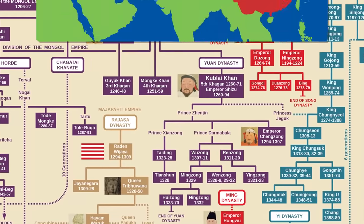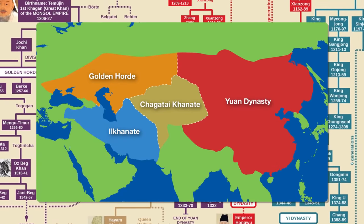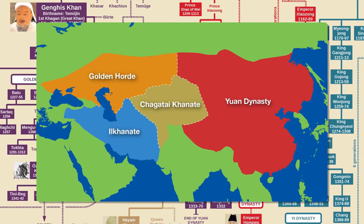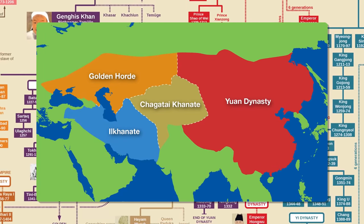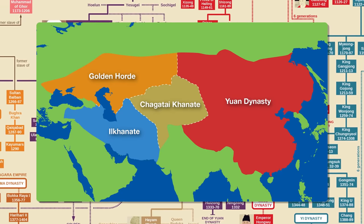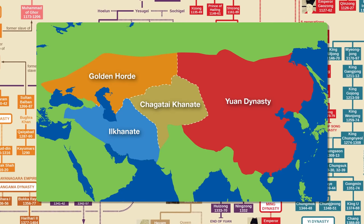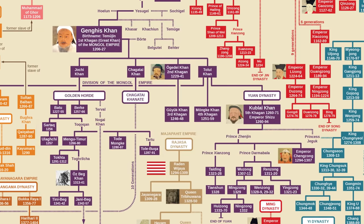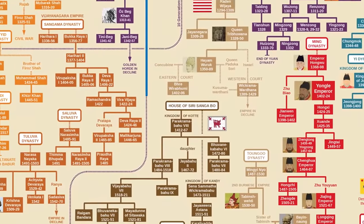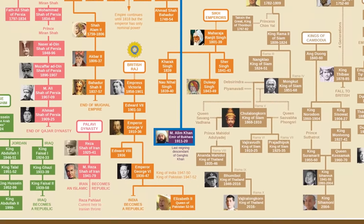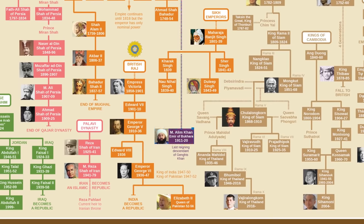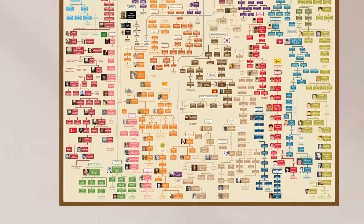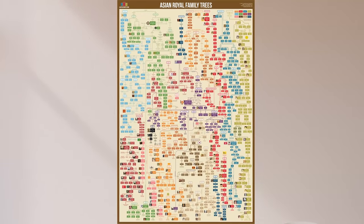By the year 1400 — less than two centuries after Chingiz's death — none of his empire's successor khanates were major players in world politics anymore. This decline came largely because of infighting among cousins in the third generation, which only grew with each subsequent generation. The last independent descendant of Chingiz Khan to rule was Sayyid Meir Muhammad Alim Khan, the last Amir of Bukhara, who was overthrown by the Russians in 1920. So that was a look at the family tree of Chingiz, or Genghis Khan.